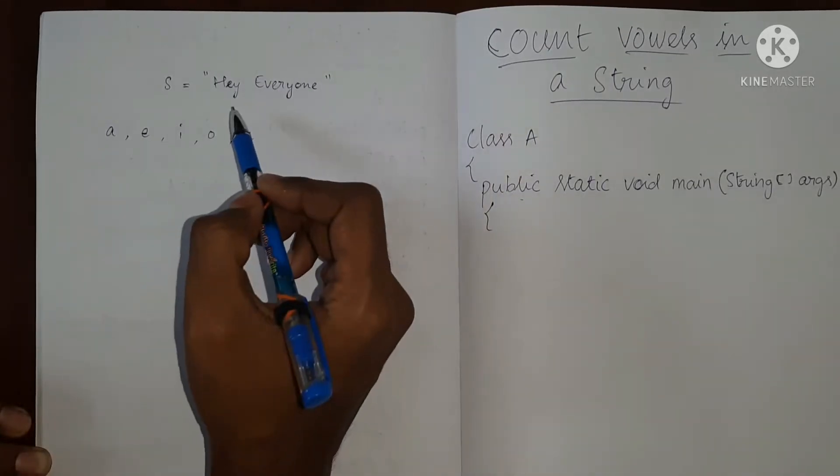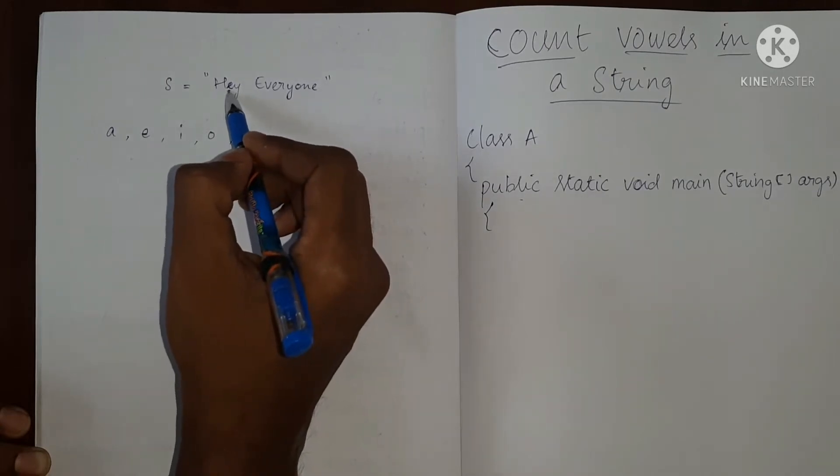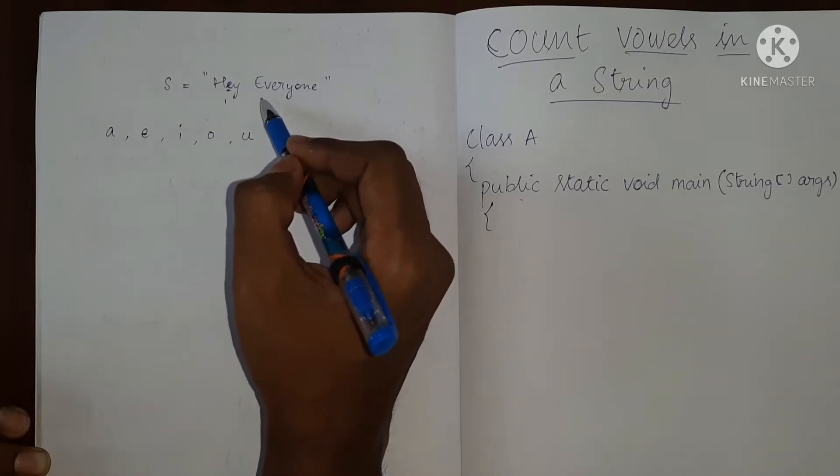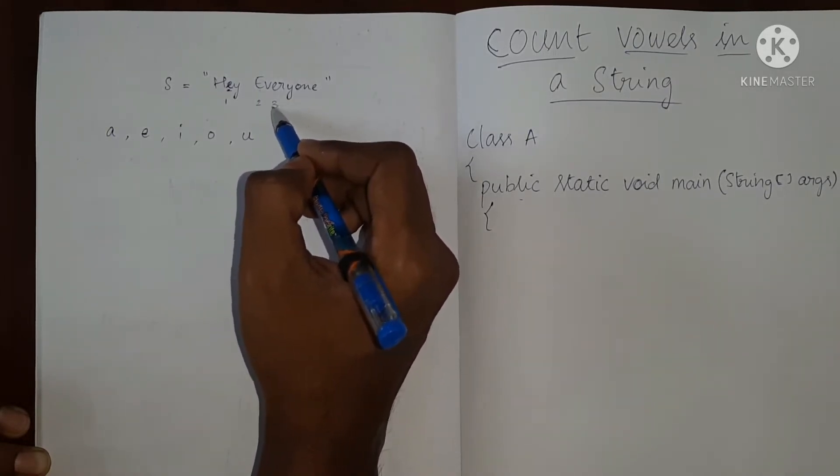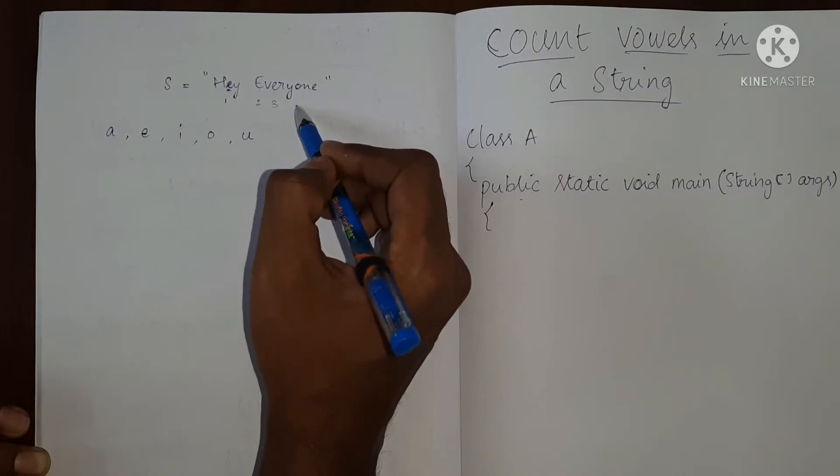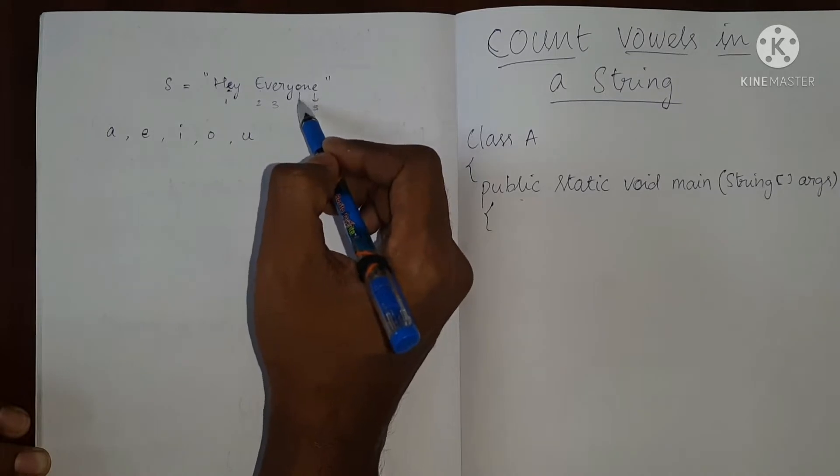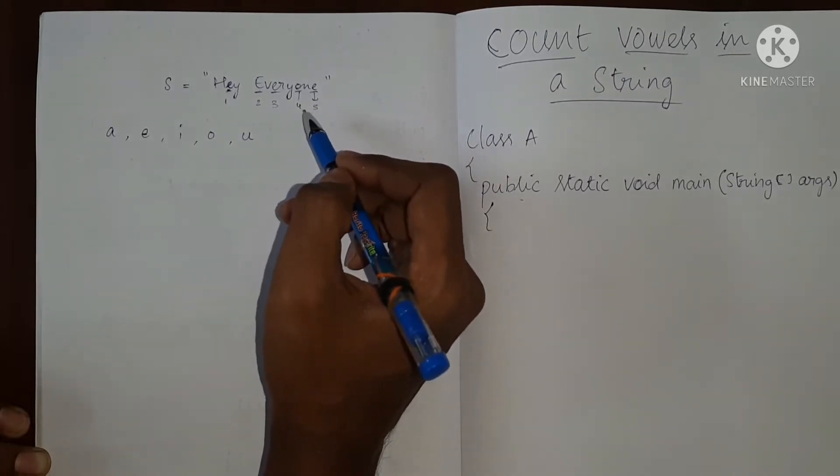So let me manually count how many vowels we have here. We have one vowel E, there is one, we have one E over here, this is the second one, this is three, this is four, and this is five. We have five vowels in this sentence.